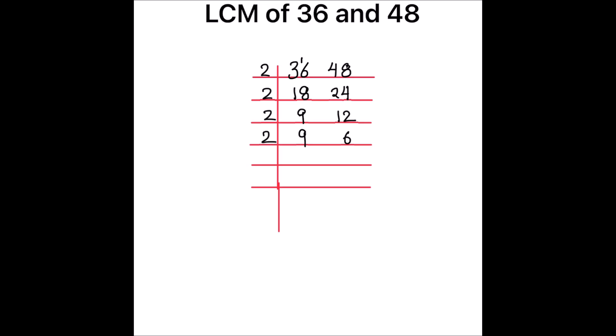Again 9 remains as is, and 2 times 3 is 6. Now 3 and 9 are both divisible by 3: 3 times 3 is 9, and 3 times 1 is 3. So both numbers are now fully divided.